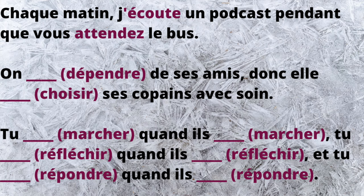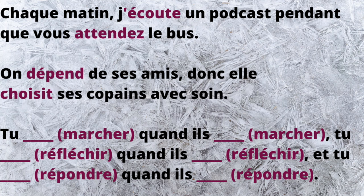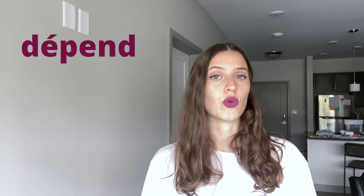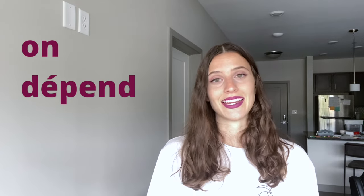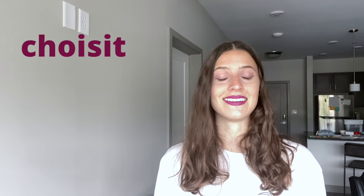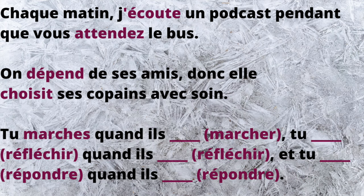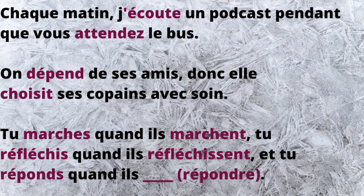The second sentence: 'On dépend de ses amis, donc elle choisit ses copains avec soin.' Dépend is an -re verb, so you delete -re and because the subject pronoun is on, you add nothing. Note also that you don't hear the -d at the end of dépend. The second verb, choisit, comes from an -ir verb — delete -ir and add -it because it goes with elle. The third sentence: 'Tu marches quand ils marchent, tu réfléchis quand ils réfléchissent, et tu réponds quand ils répondent.'